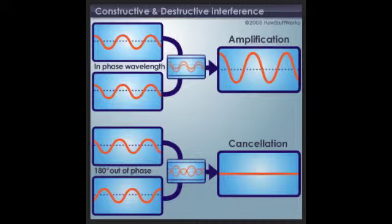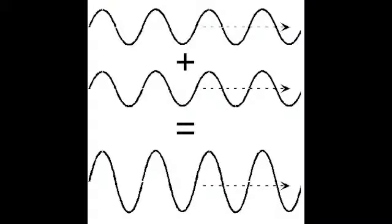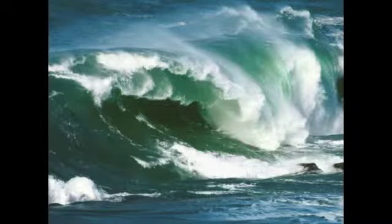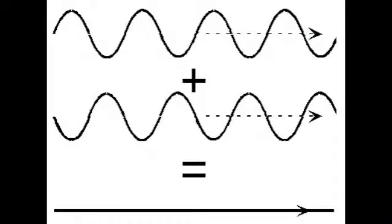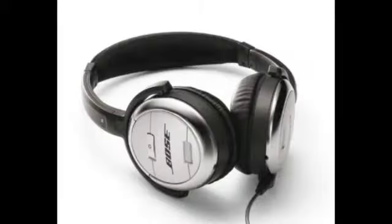Destructive interference is crest versus trough, and makes the amplitude zero. Some constructive interference examples are waves crashing together in an ocean, or musical chords, and a destructive example would be the Bose noise-cancelling headphones that sound out a sound wave that the human ear cannot hear, and cancels out all other noises.